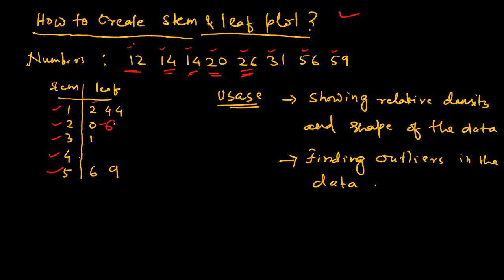Similarly, in the 30s, we have 31. So against 3, we put 1. There is no number in the 40s, so we go one step below and against 4, there is no number - we just leave it blank. In the 50s, we have 56 and 59, so we put 6 and 9.